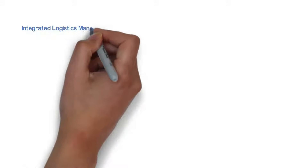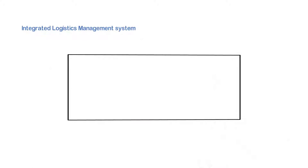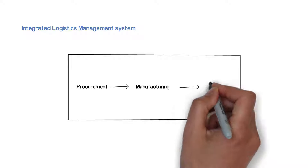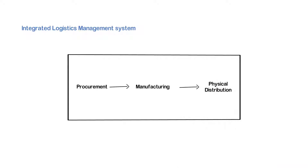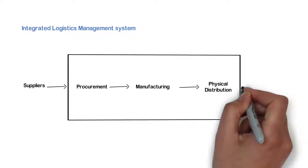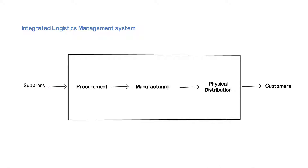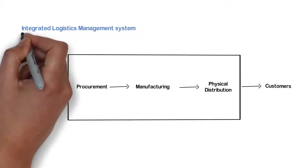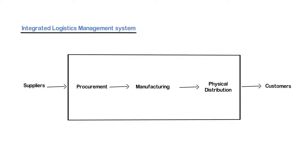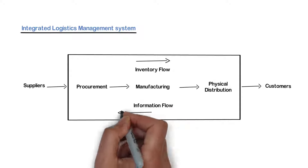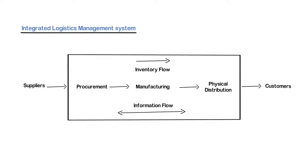In Integrated Logistics Management, coordination is brought into various activities relating to procurement of materials, inventory flow and physical distribution of materials across the supply chain from the supplier point to the customer point through manufacturing to the market to satisfy the expectation of the customer. Hence, Integrated Logistics Management System is referred to the set of activities relating to storage and flow of materials, information and control system in a cost-effective manner. If you look at the diagram, the relationship of the Logistics Management System is evident.